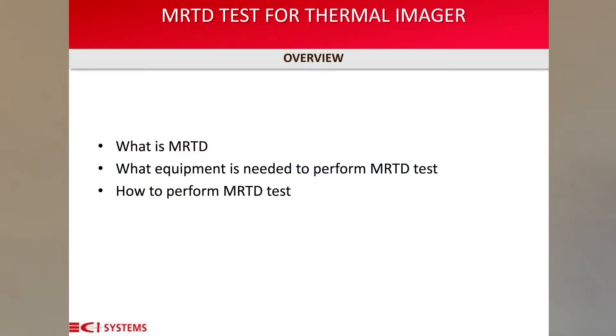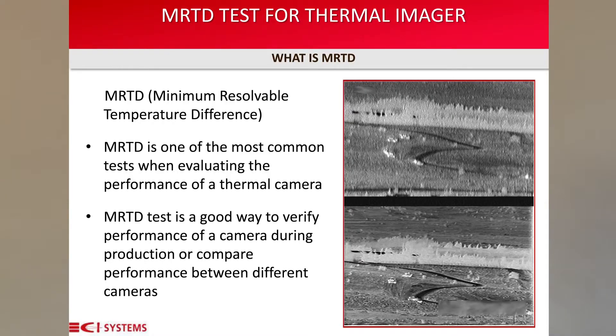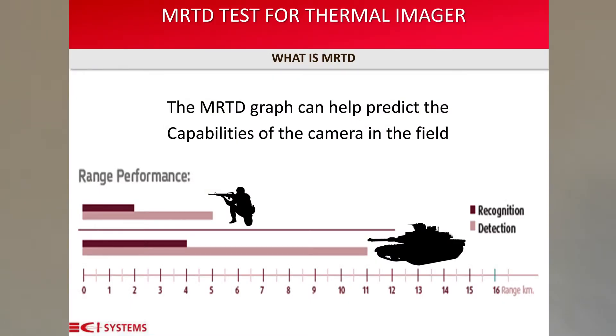What is MRTD? What equipment is needed? And how to perform the MRTD test? MRTD stands for Minimum Resolvable Temperature Difference. It is also known as MRT. MRTD is a test that helps us evaluate the performance of a thermal camera. It enables the user to estimate the performance of the camera in the field by measuring the probability of detection, recognition, and identification of a target in the field. MRTD is a subjective test because its output is based on the user's ability and not on image processing.